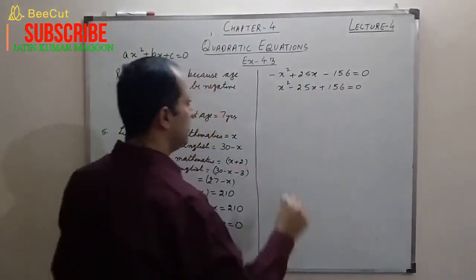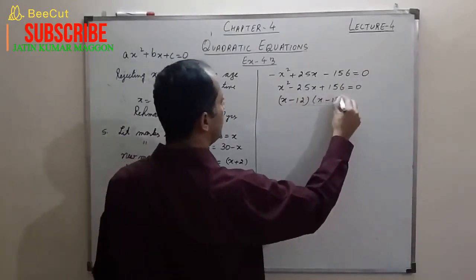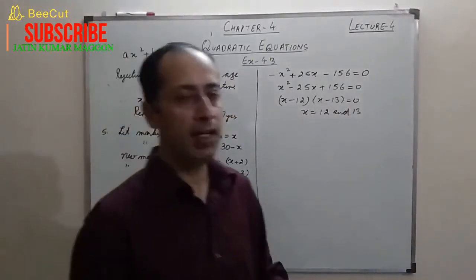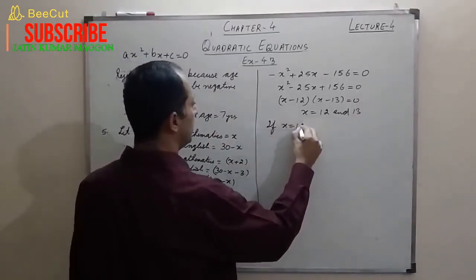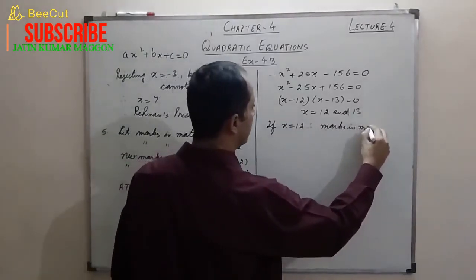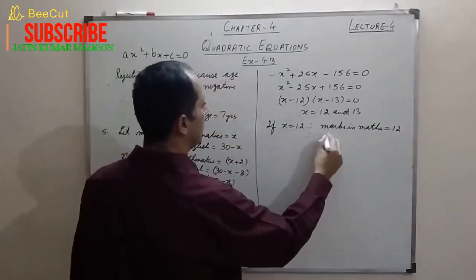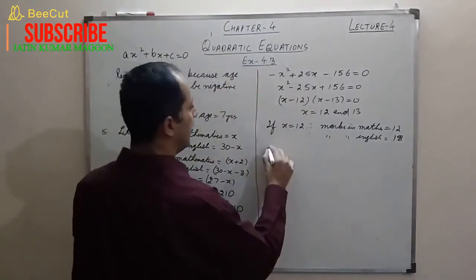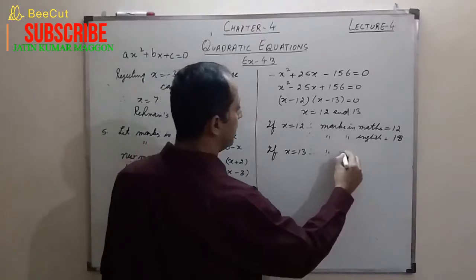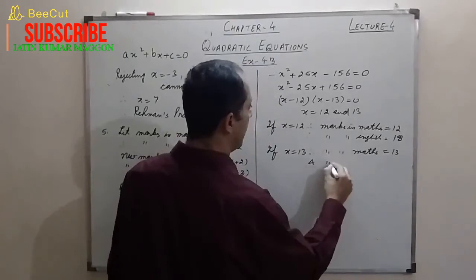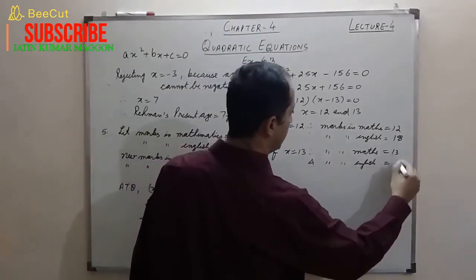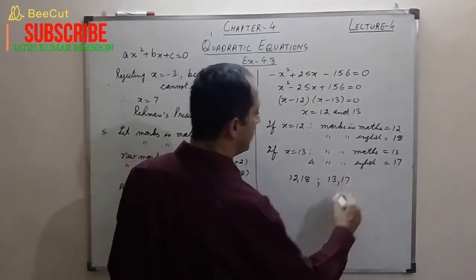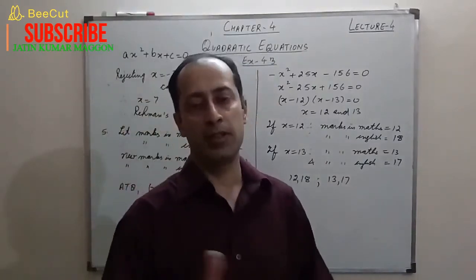Factorizing x²−25x+156 = 0 gives (x−12)(x−13) = 0, so x = 12 or x = 13. Both values are positive, so both are valid. If x = 12: marks in maths = 12, marks in English = 30−12 = 18. If x = 13: marks in maths = 13, marks in English = 17. So we get two pairs: (12, 18) and (13, 17).